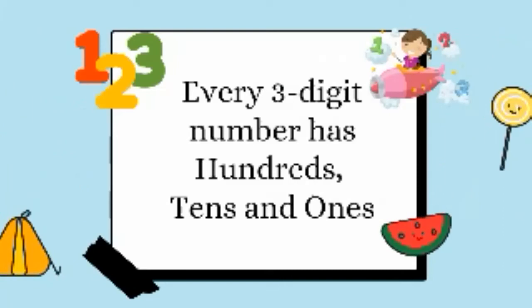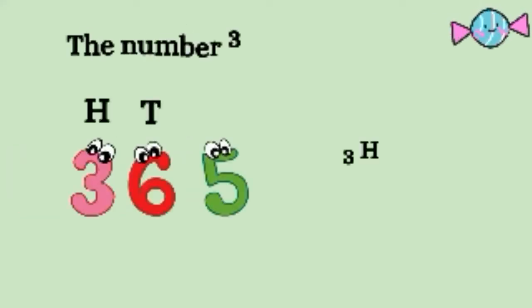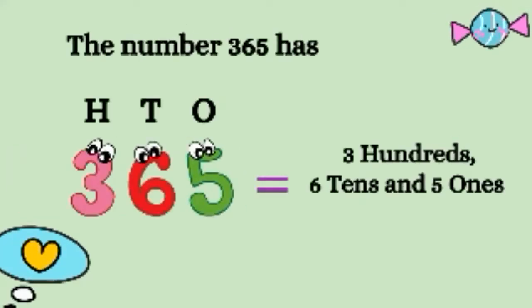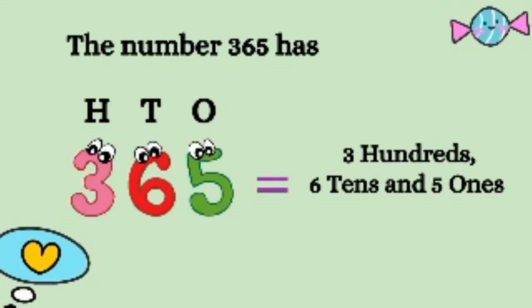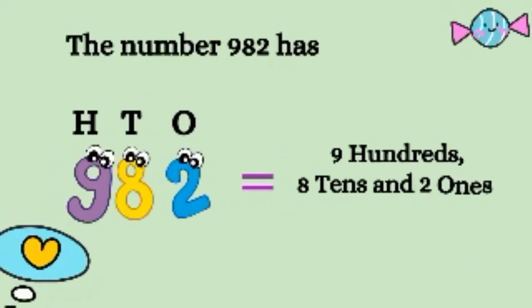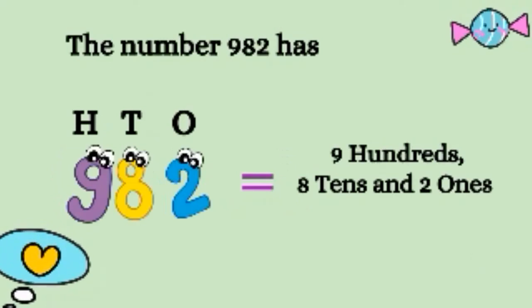Every three-digit number has hundreds, tens, and ones. The number three hundred and sixty-five has three hundreds, six tens, and five ones. The number nine hundred and eighty-two has nine hundreds, eight tens, and two ones.